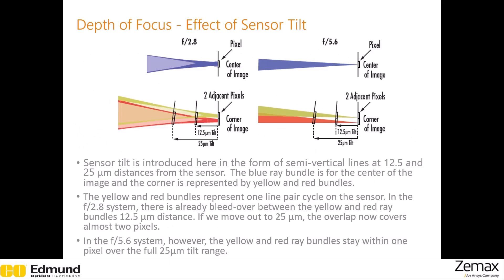Now we will see how introducing sensor tilt affects the performance of an imaging system. These two semi-vertical lines represent the sensor tilt. The yellow and red ray bundles represent one line pair on the sensor. You can see that in the F2.8 system, there is quite a bit of overlap of the ray bundles at 12.5 microns, and even more at 25 microns. So this tilt significantly affected the performance of the F2.8 lens — it now spans two pixels.